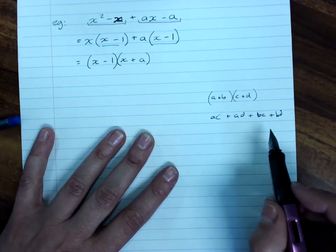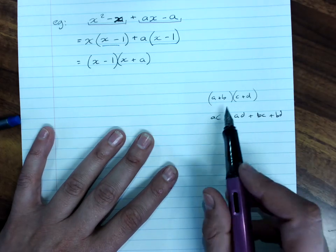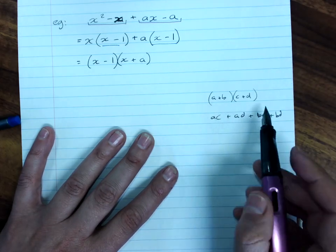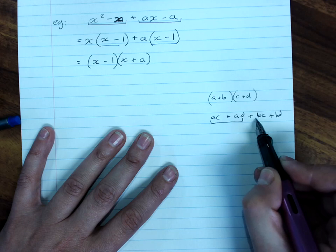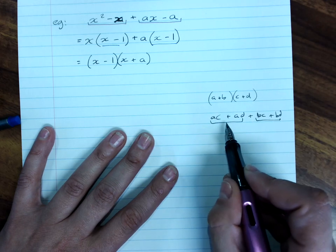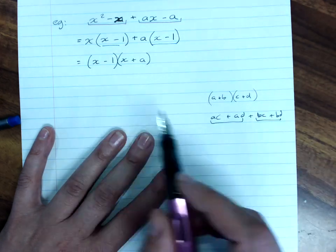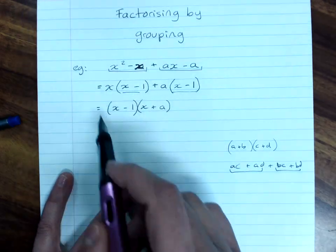And if I wanted to factorize that back you'd split it up into two pairs, factorize them separately, just as we did here.